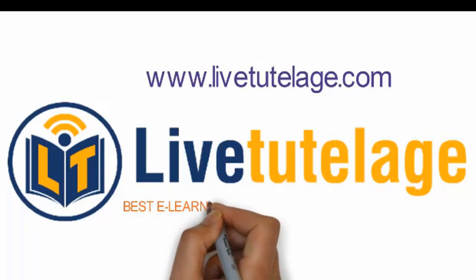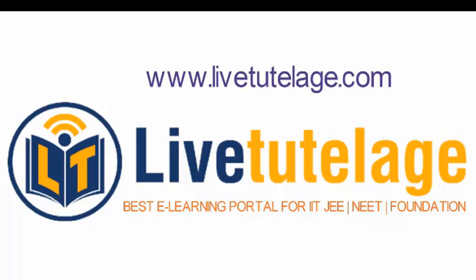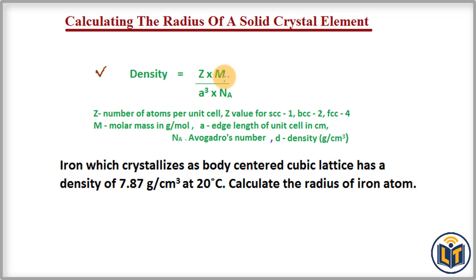Welcome to livetoplace.com, the best e-learning portal for IIT JEE and foundation. In this video I will discuss how to calculate the radius of a solid crystal element. This is the density formula, which we need to solve this problem: density is equal to Z times M divided by a-cubed times N_A.